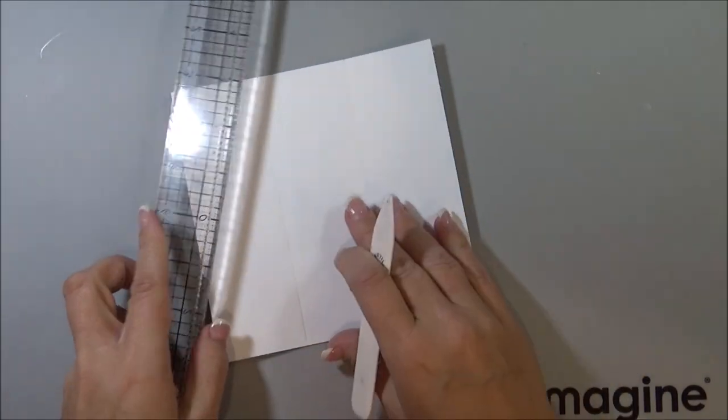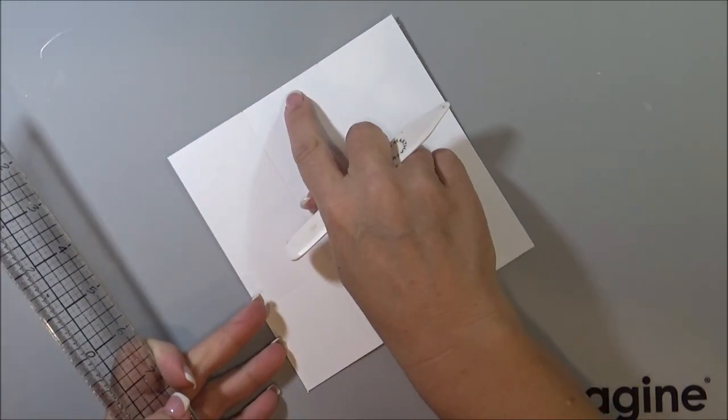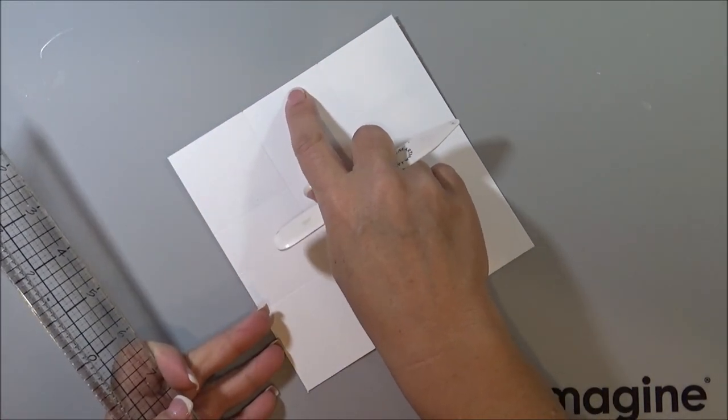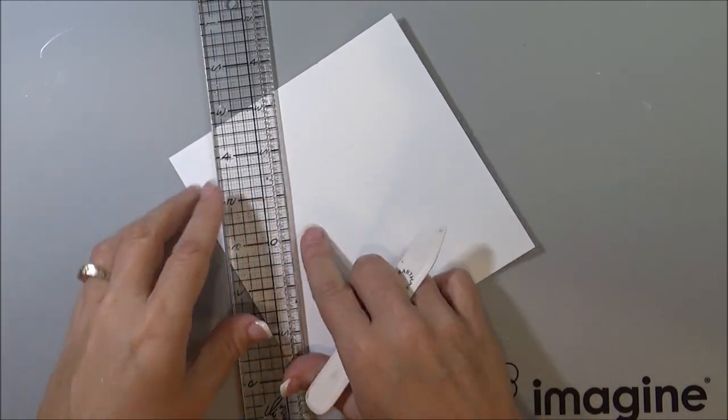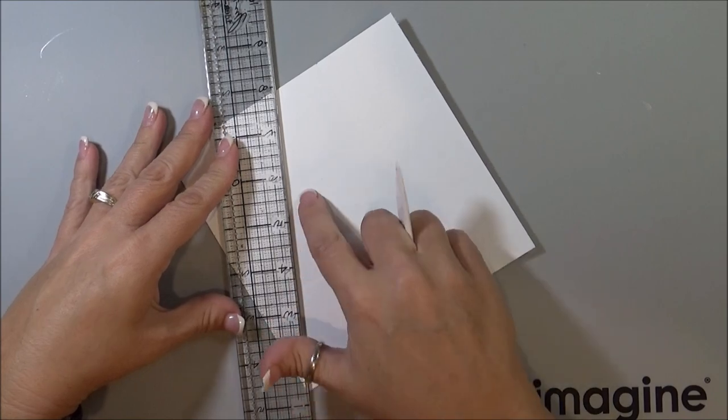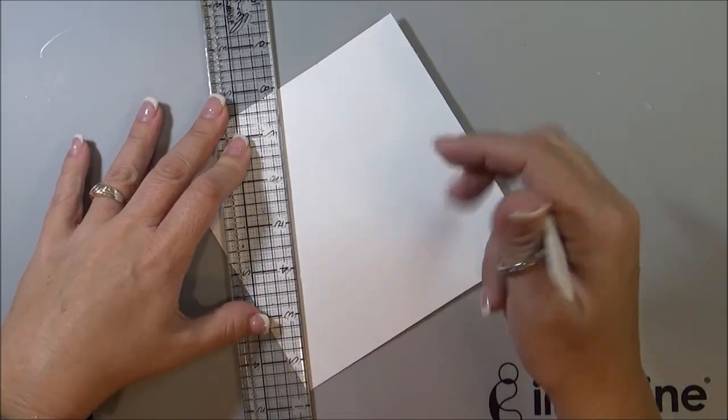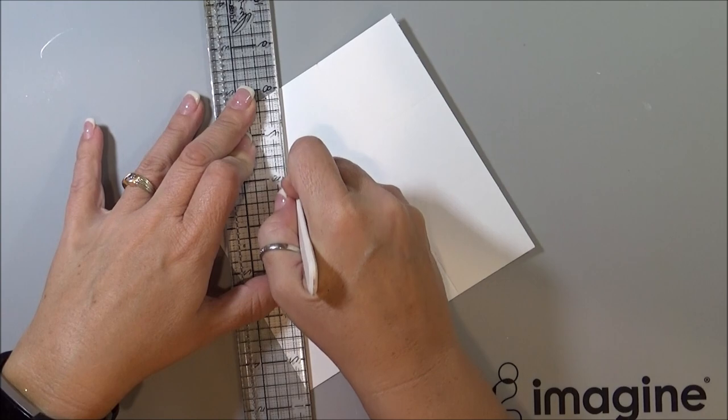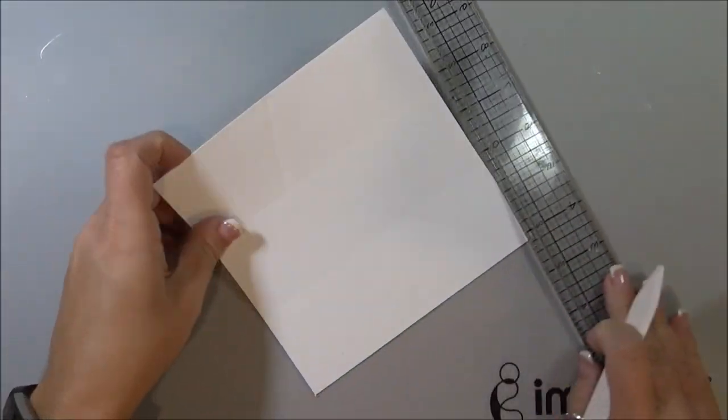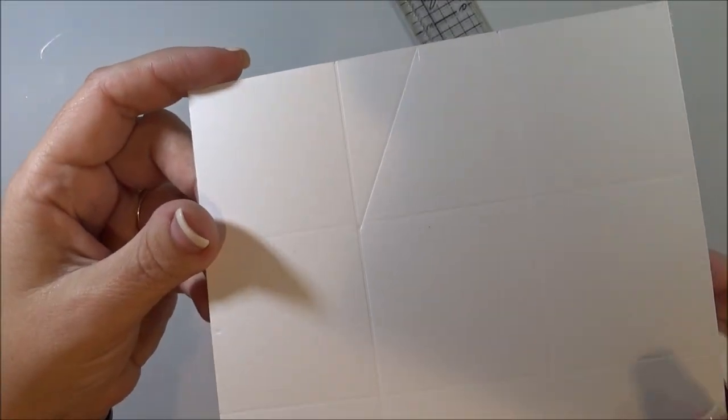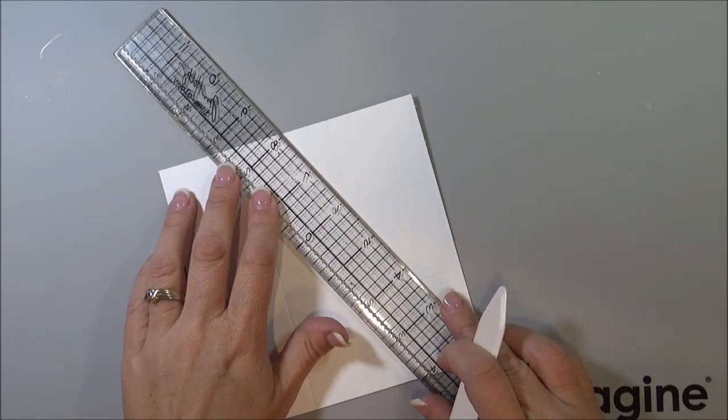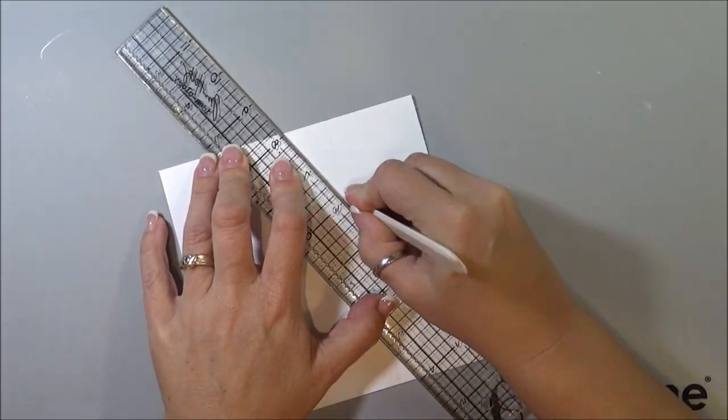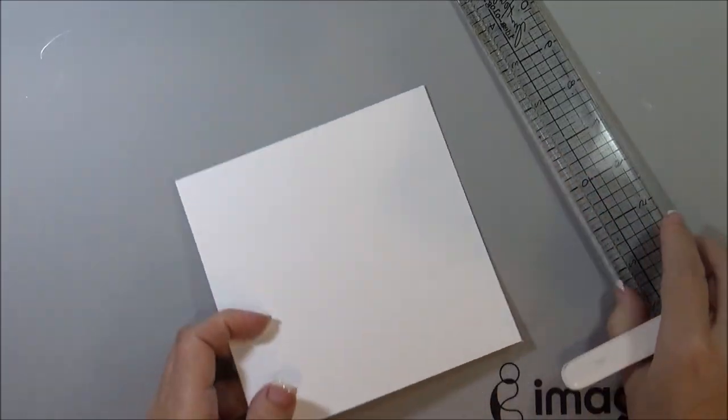So next, taking a ruler from that 3 inch, where the, into the center, where the little notch is at, down to the first, where the 2 squares meet together, like that. I'm just going to score it down at an angle. So it'll look like that. I'm going to repeat that on the other side and keep going all the way around.